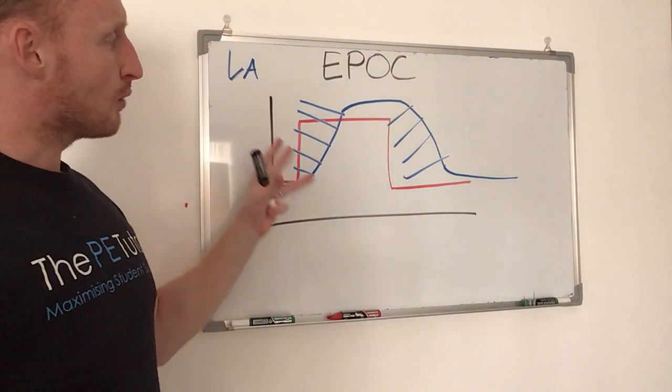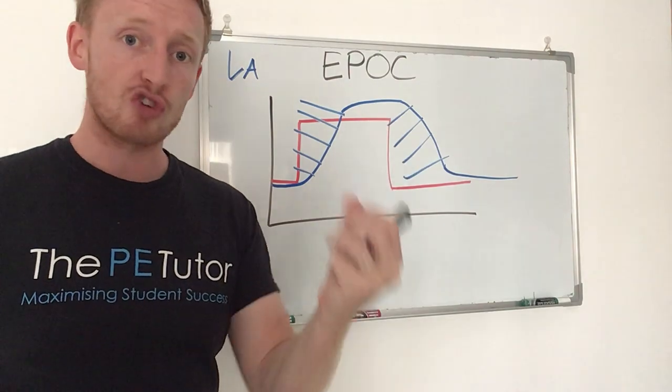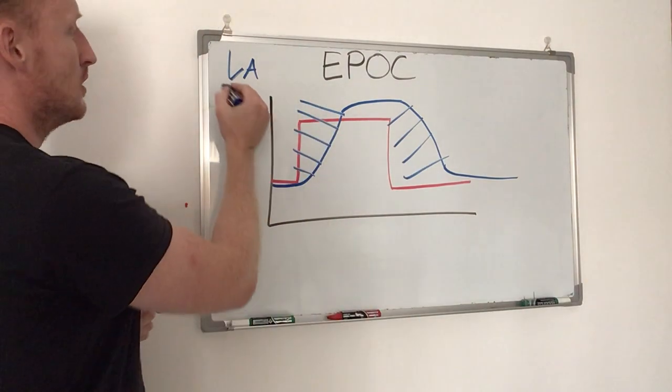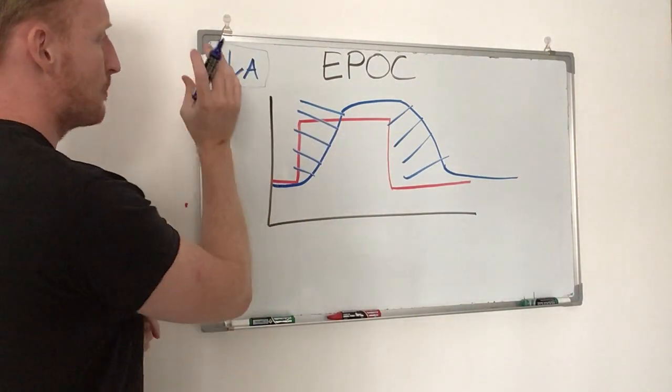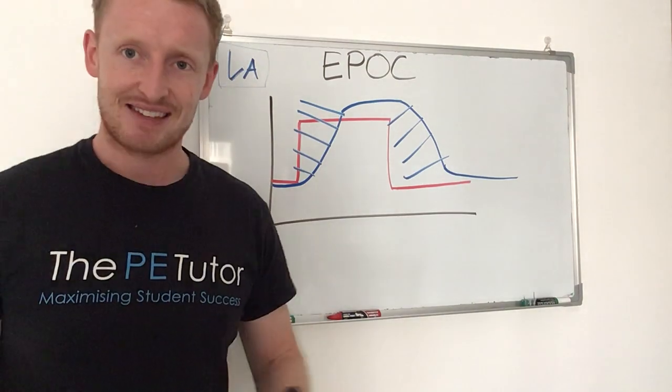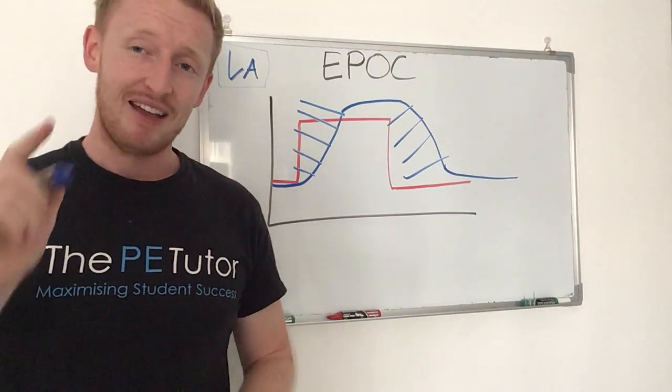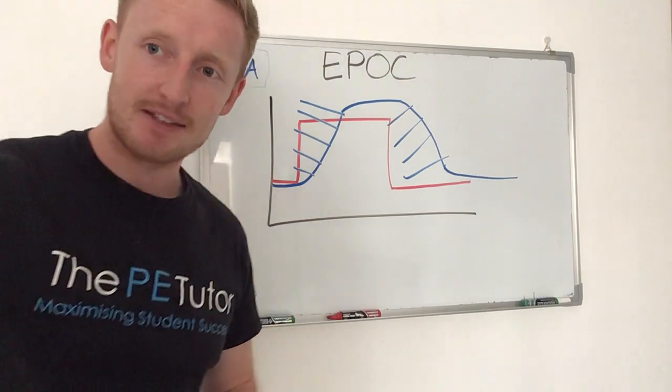Why? To re-saturate all of our muscles and mitochondria with oxygen, but also to start and continue the breakdown and removal of lactic acid. That's EPOC, and that is your knowledge in 90 seconds.